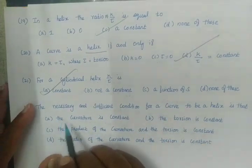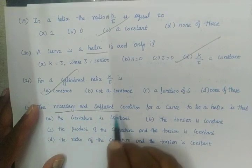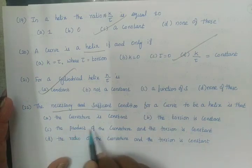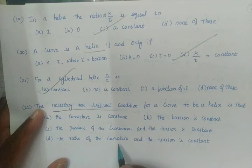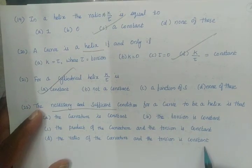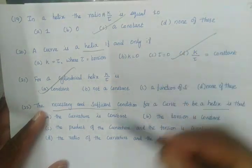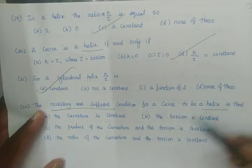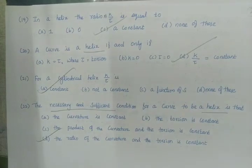The necessary and sufficient condition for a curve to be a helix is that the ratio of the curvature to the torsion is constant. The ratio K by τ equals constant is the necessary and sufficient condition. Option D is the right option.